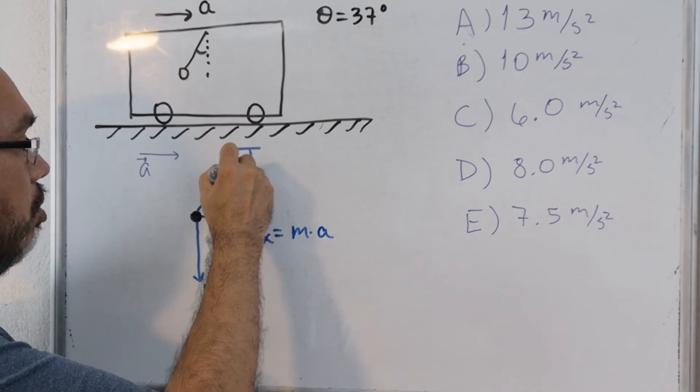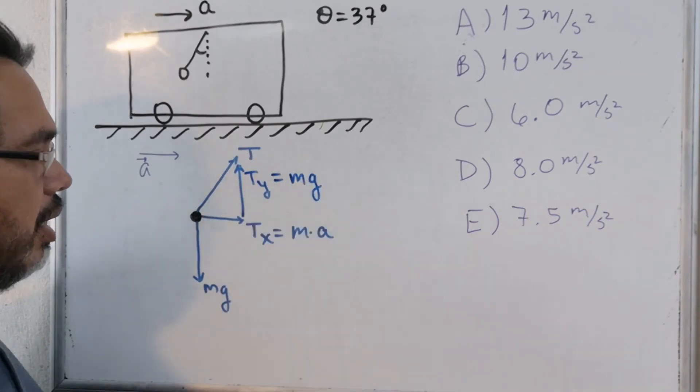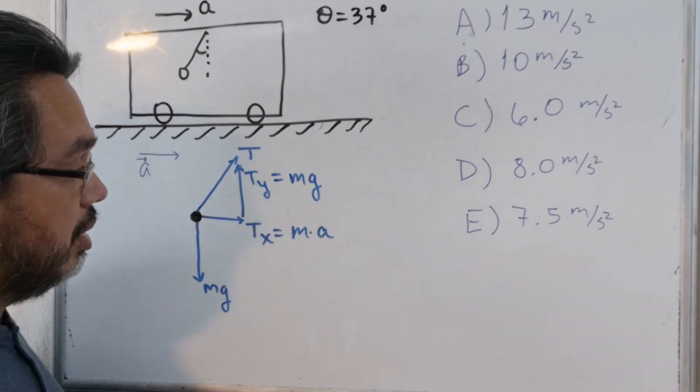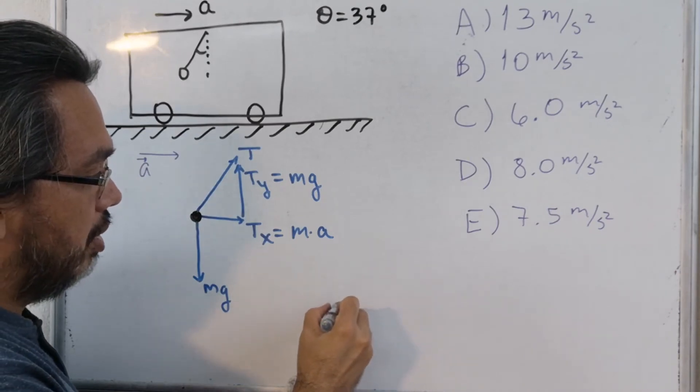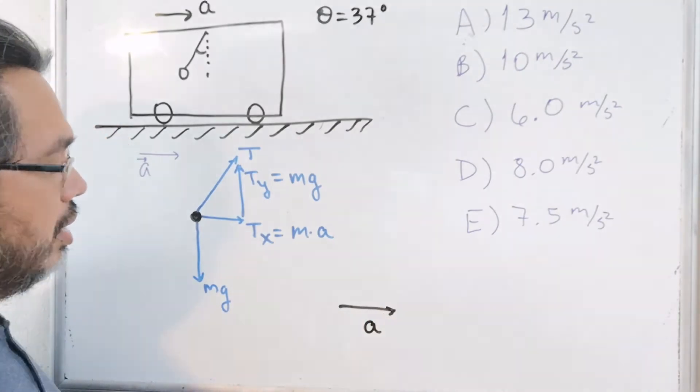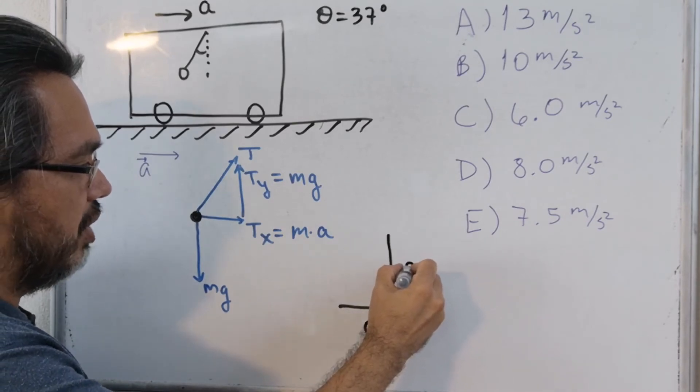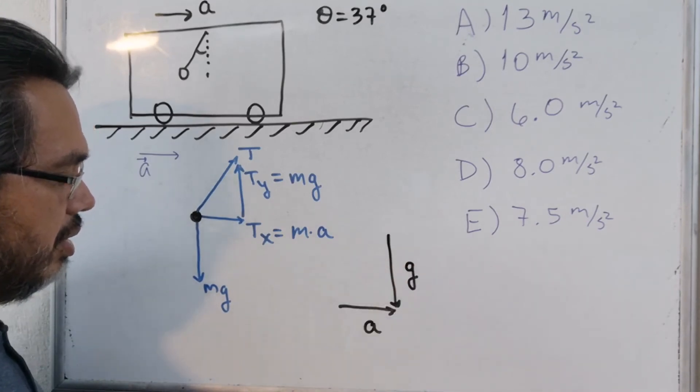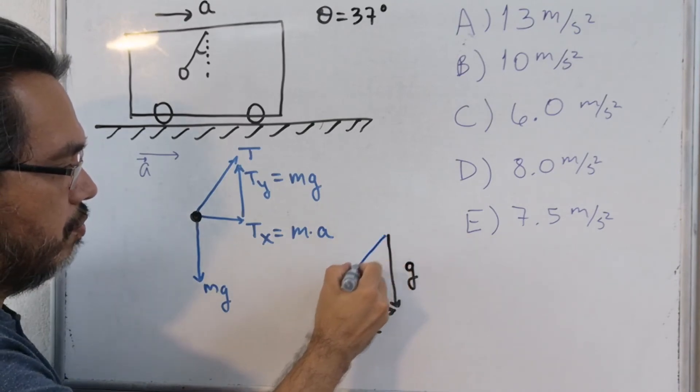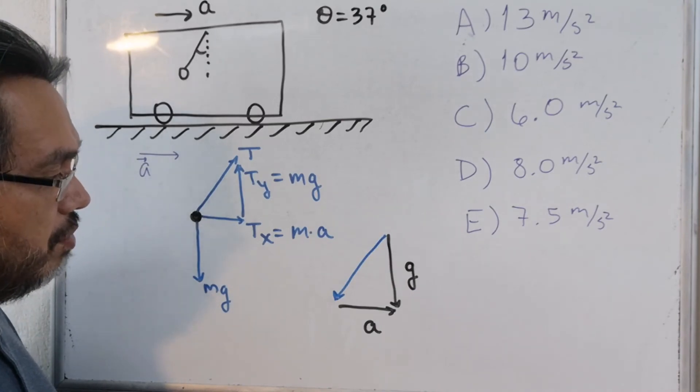That your tension along the Y axis must be equal to Mg. And it basically means that you have a forward acceleration like this, and downward gravitational acceleration like this, for which this vector represents the direction of the tension.